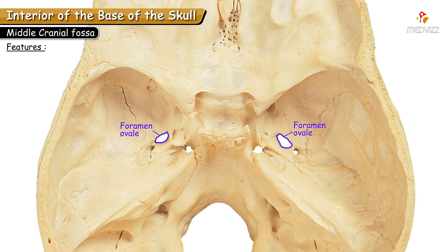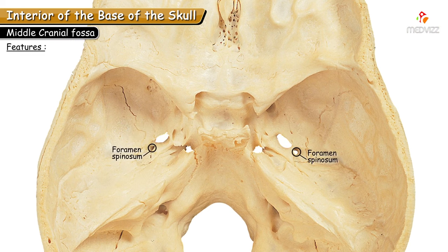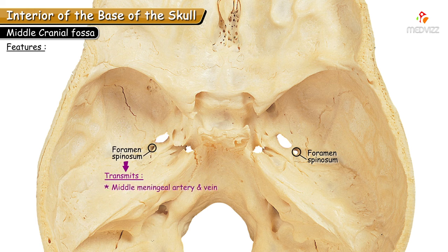Posterolateral to the foramen ovale, the smaller foramen is the foramen spinosum, named because it is related to the spine of the sphenoid in norma basalis. It leads inferiorly to the infratemporal fossa along with the foramen ovale. Foramen spinosum transmits the middle meningeal vessels and the nervus spinosus, which is the recurrent meningeal branch of the mandibular nerve. This neurovascular bundle supplies the major part of the meninges in the middle cranial fossa.